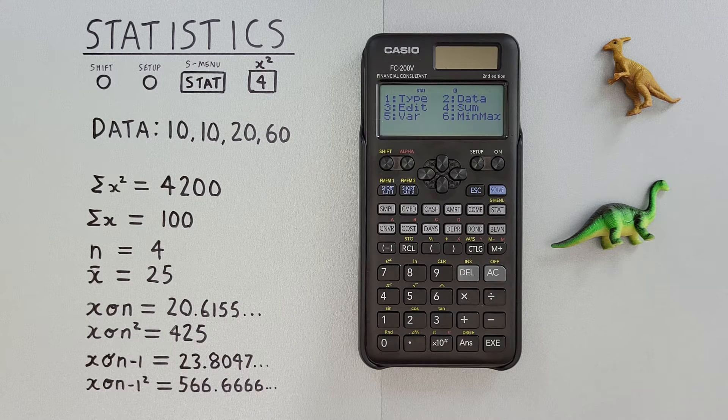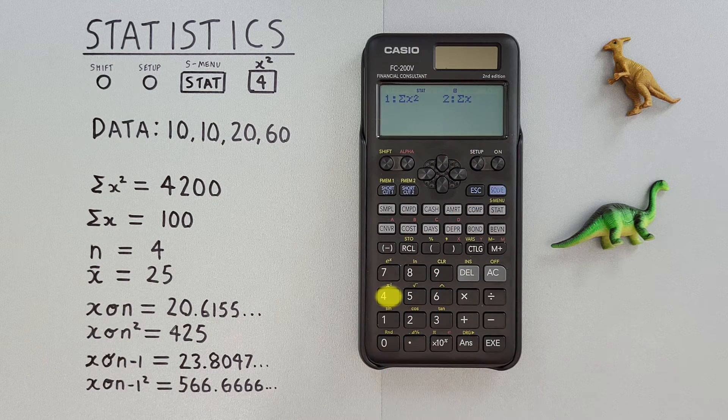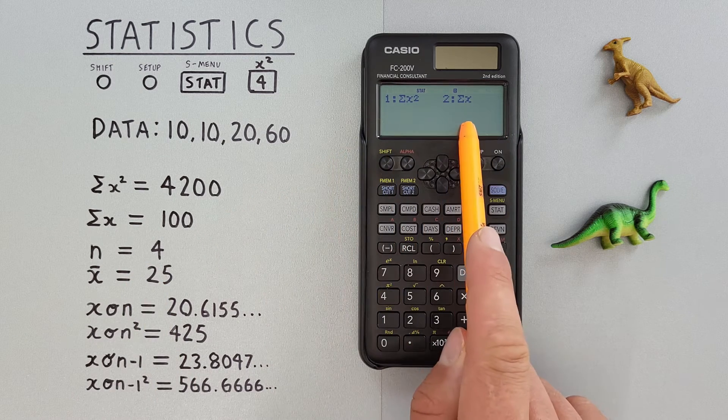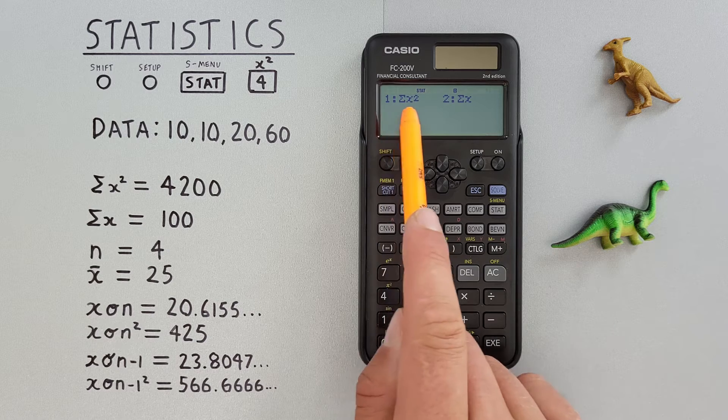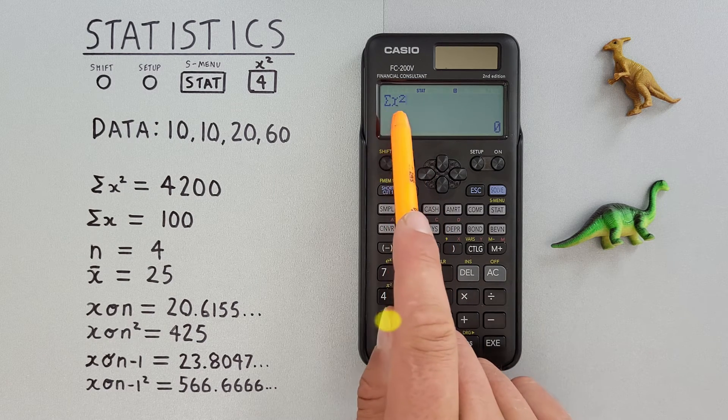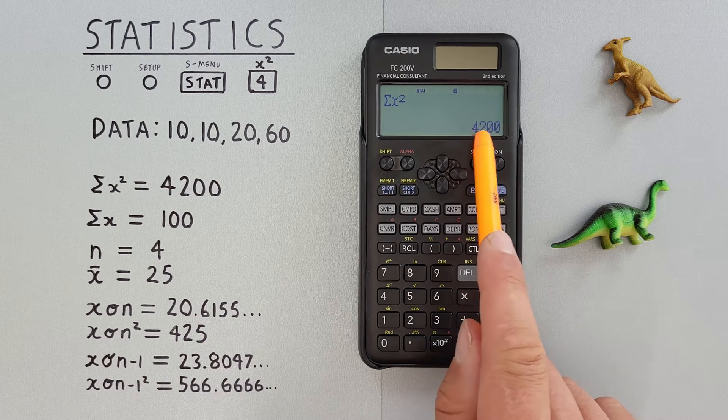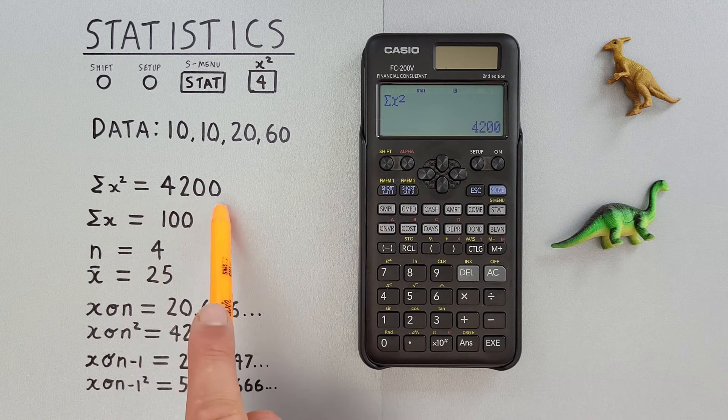Now let's look at some results. If we choose number four, sum, that brings us to this menu. We can choose number one to get our sum of squares. That puts it on our screen. And if we hit EXE, we see we get the result of Σx² = 4200, which is correct.